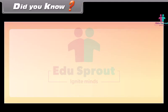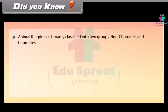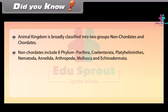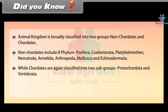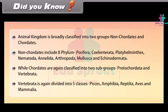Animal Kingdom is broadly classified into two groups: Non-Chordates and Chordates. Non-Chordates include 8 phyla: Porifera, Coelentrata, Platyhelminthes, Nematoda, Annelida, Arthropoda, Mollusca, and Echinodermata. Chordates are classified into two subgroups: Protochordata and Vertebrata. Vertebrata is further divided into five classes: Pisces, Amphibia, Reptilia, Aves, and Mammalia.